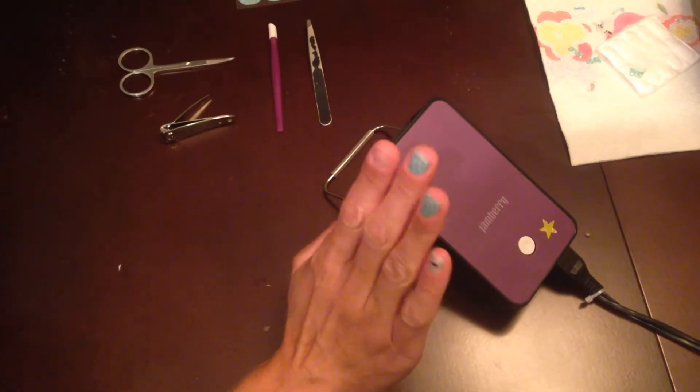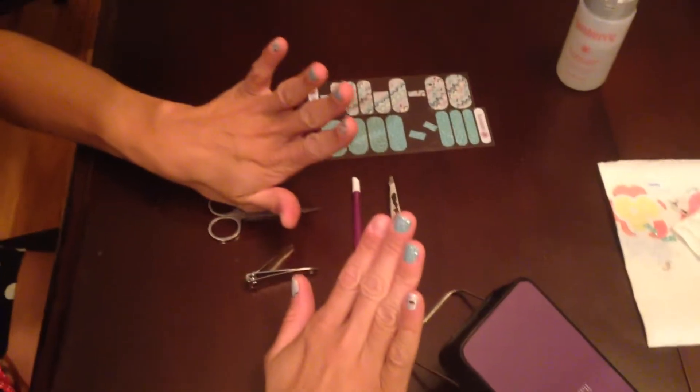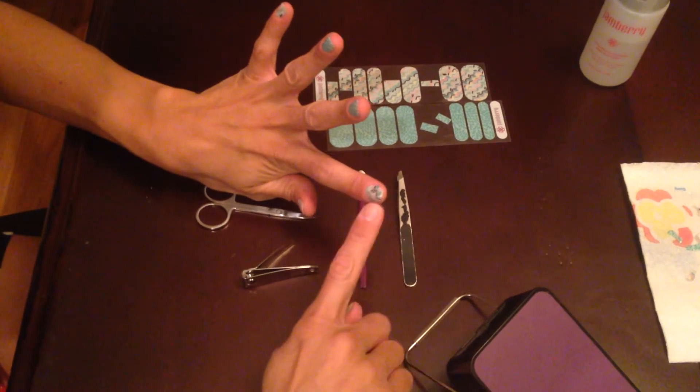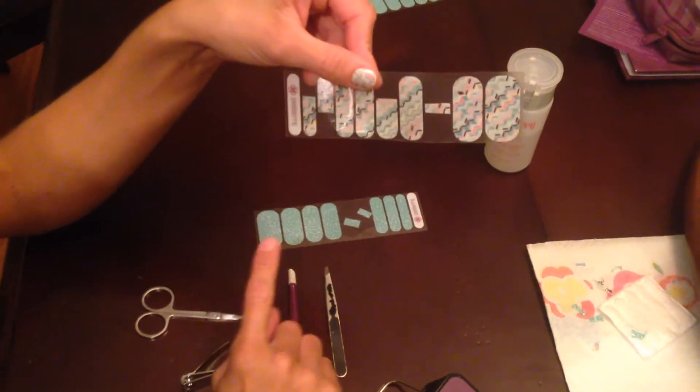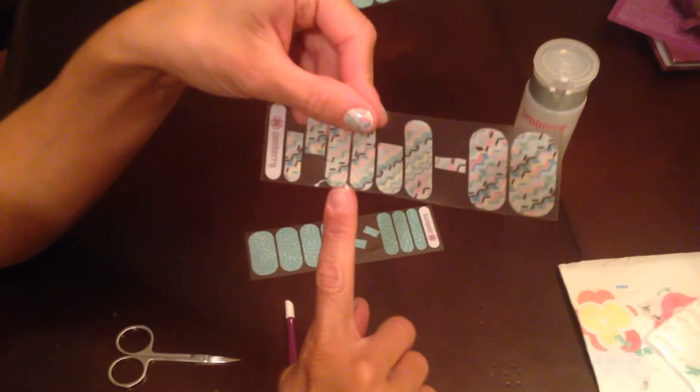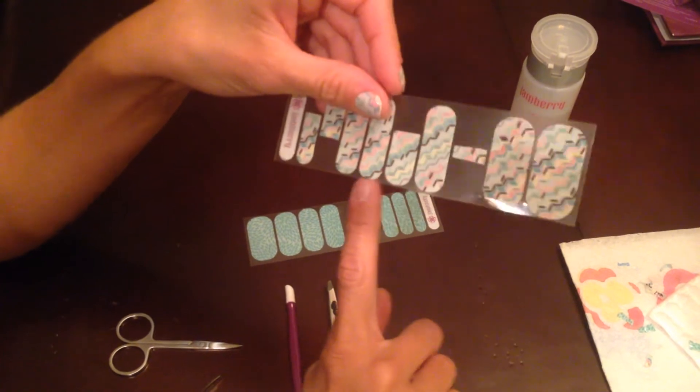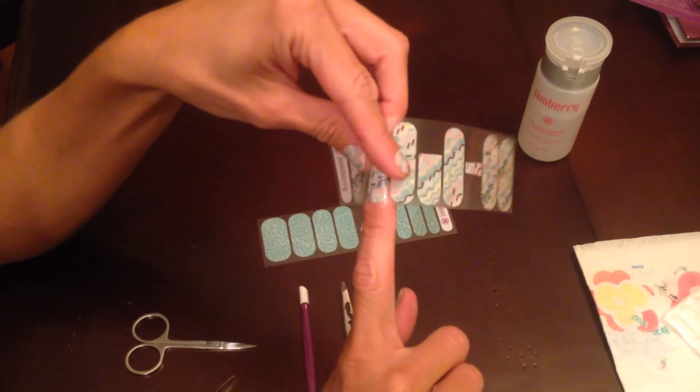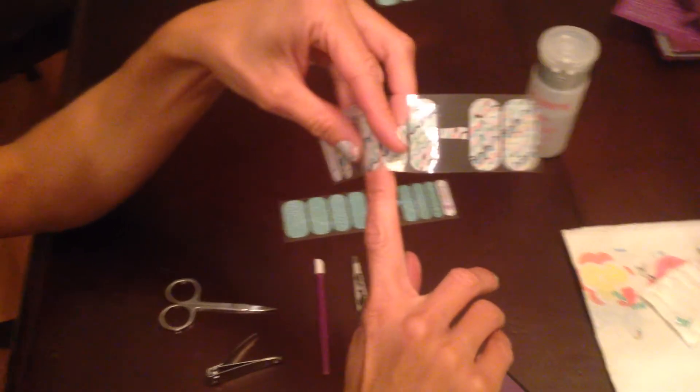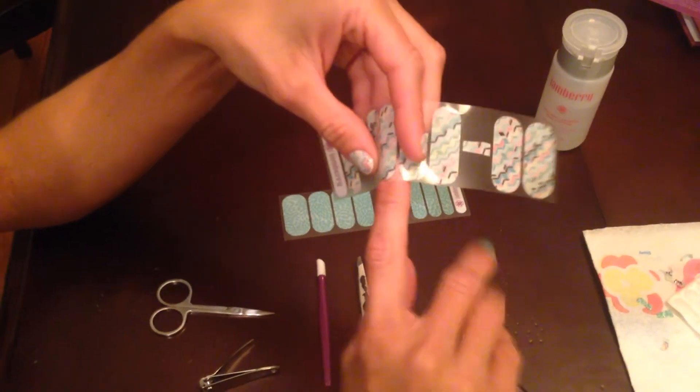So I'm going to show you how to apply your jams. Carrying on with my pattern, I need to use this one. Essentially, what you do is you come across and you match up the size of your nails. So I know this one is way too big, but this one, that one's too small. So I know with my nail, I am this one.